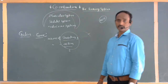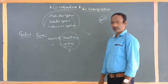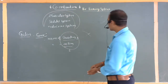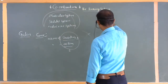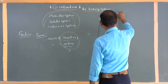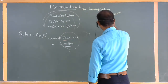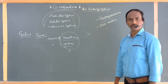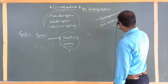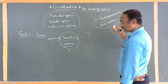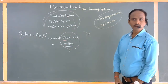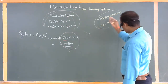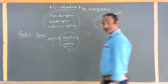Following Galen's observations, several scientists performed further experiments on neurons. Finally, they concluded that nerves are of two basic categories: sensory neurons and motor neurons. These two types of neurons are responsible for both stimulations and responses, performing several kinds of actions both internally and externally.